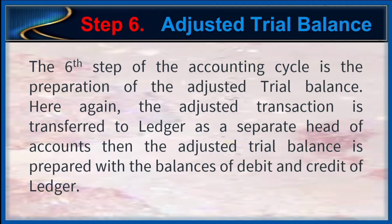Step 6: Adjusted Trial Balance. The sixth step of the accounting cycle is the preparation of the adjusted trial balance. Here again, the adjusted transaction is transferred to the ledger as a separate head of accounts. Then the adjusted trial balance is prepared with the balances of debit and credit of ledgers.